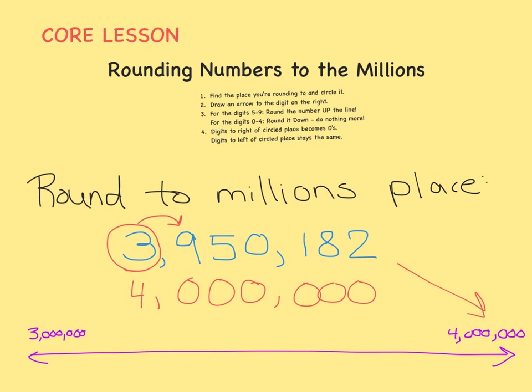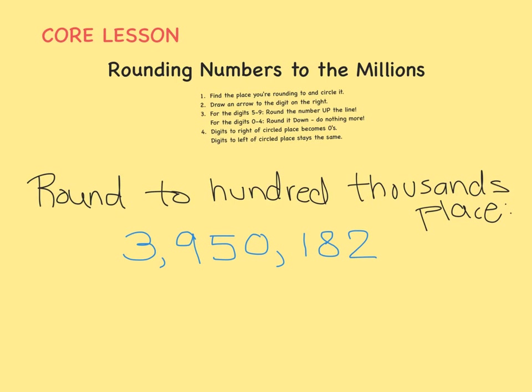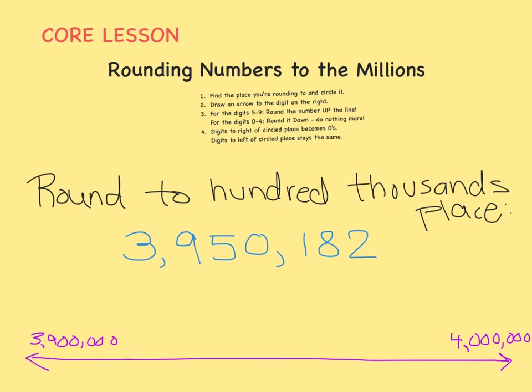So this number rounds up to 4 million, which means it would be closer to 4 million if we placed it on a number line. Now let's round that same number to the nearest hundred-thousands place. Will it round down to 3,900,000 or up to 4,000,000?